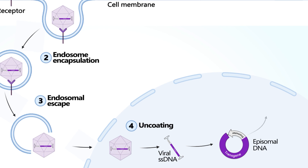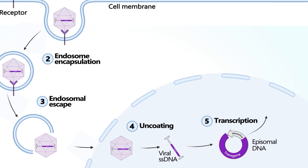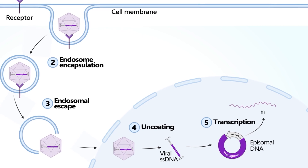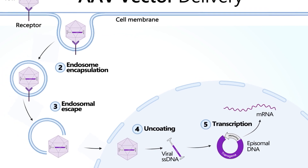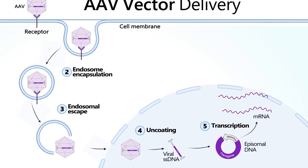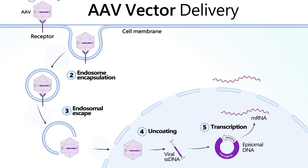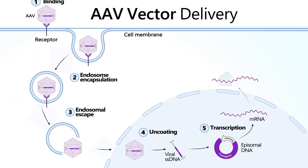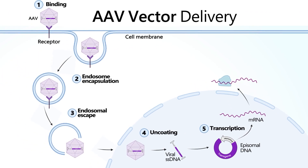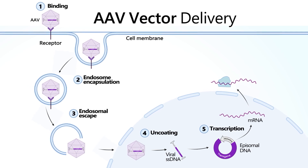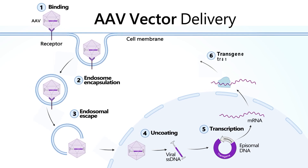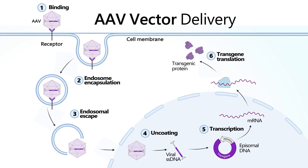The promoter sequence next to the transgene initiates transcription into mRNA. The resulting mRNA is translocated into the cytoplasm, where it is translated into a functional protein. Once produced, the protein is recruited to different cell components to function.